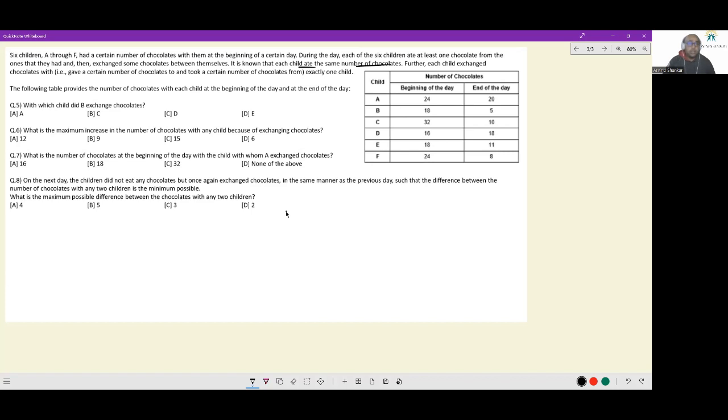Further, each child exchanged chocolates with, that is, gave a certain number of chocolates to and took a certain number of chocolates from exactly one child. So there are unique pairings. There are six children, so there will be three unique pairings in which one child is giving chocolates and one child is receiving chocolates.